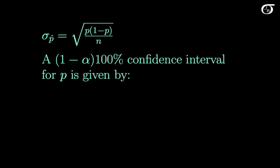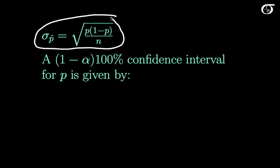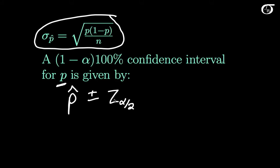To construct confidence intervals, our standard deviation of the sampling distribution is needed. The confidence interval for parameter p starts with our best guess, p-hat. With a large sample size we have approximate normality and can construct confidence intervals in the usual way: p-hat plus or minus our margin of error. The margin of error is made up of our z sub alpha over 2 value times the standard error of p-hat. Importantly, we never use t here — proportions use z, not t.